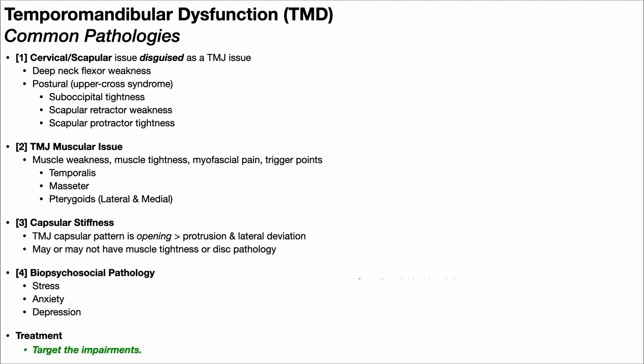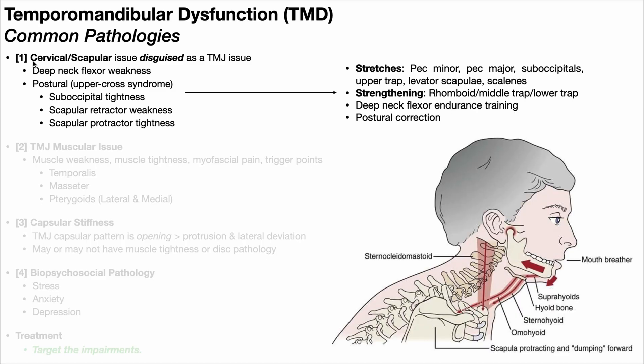In this video, I'm going to be discussing some common pathologies or common impairments that you might find in somebody with temporomandibular dysfunction, or TMD. We're going to dissect each of these in a little bit more detail in just a few minutes, but I want to briefly read through them first so I can make a couple of important points. The first pathology is when there are cervical, thoracic, or scapular issues that are masquerading as TMD.